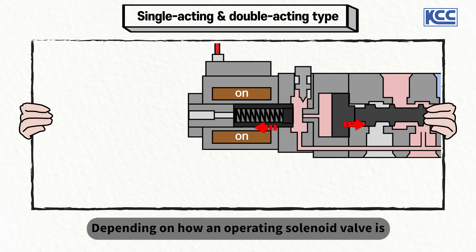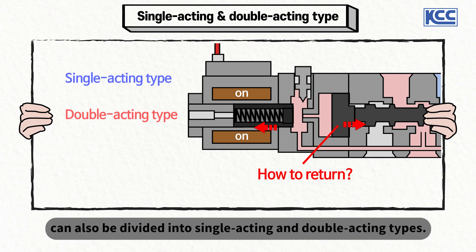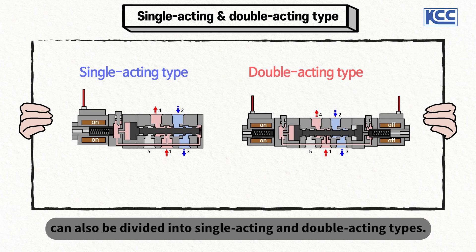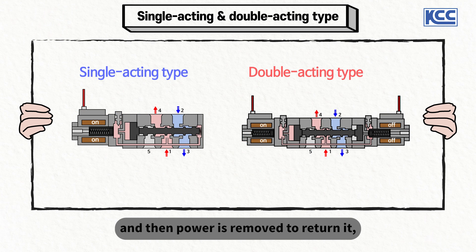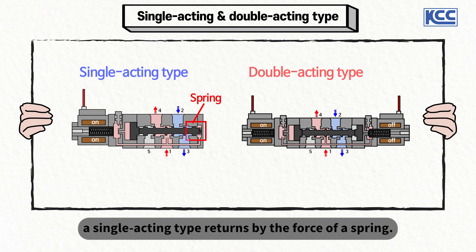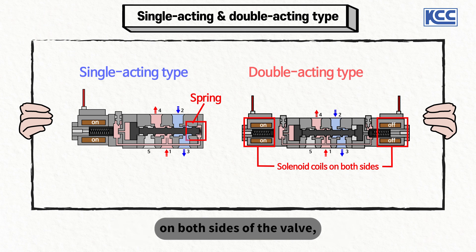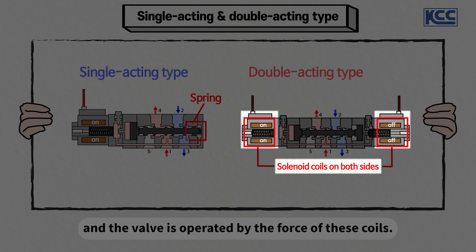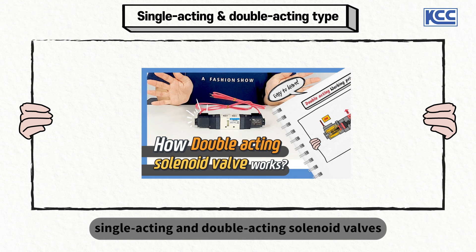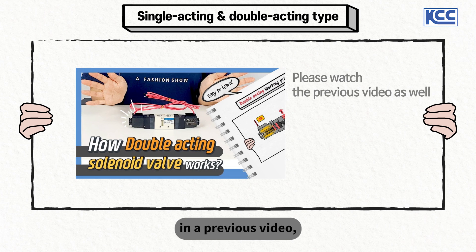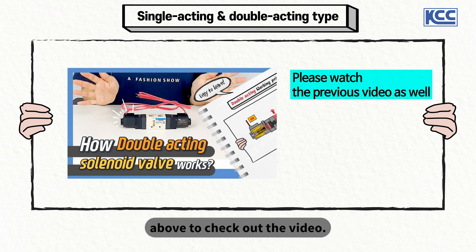Depending on how an operating solenoid valve is returned to its original state, solenoid valves can also be divided into single acting and double acting types. When power is applied to operate a solenoid valve and then removed to return it, a single acting type returns by the force of a spring. A double acting solenoid valve has coils on both sides of the valve and is operated by the force of these coils. Detailed characteristics were covered in a previous video — click the card above to check it out.